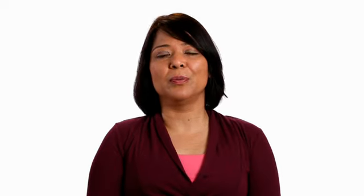Why is WAN aggregation important? As businesses grow and needs evolve, enterprises are increasingly comprised of campuses and branch offices dispersed across several geographical locations. These dispersed locations cannot operate as independent silos. They have to be connected to the corporate headquarters and communicate with each other. An optimal method of achieving this is by aggregating connectivity from the corporate headquarters to branches or multiple campuses where possible.